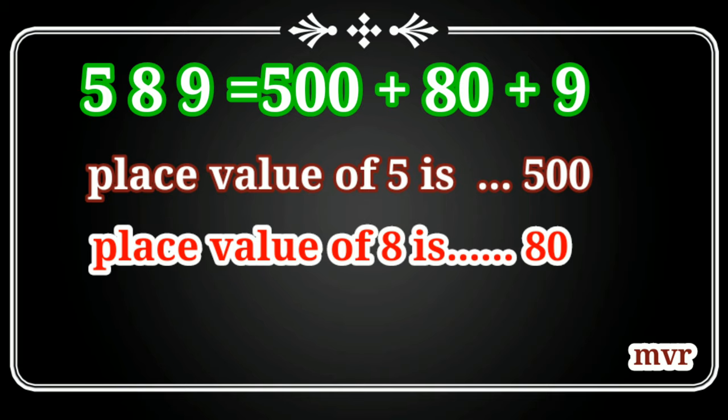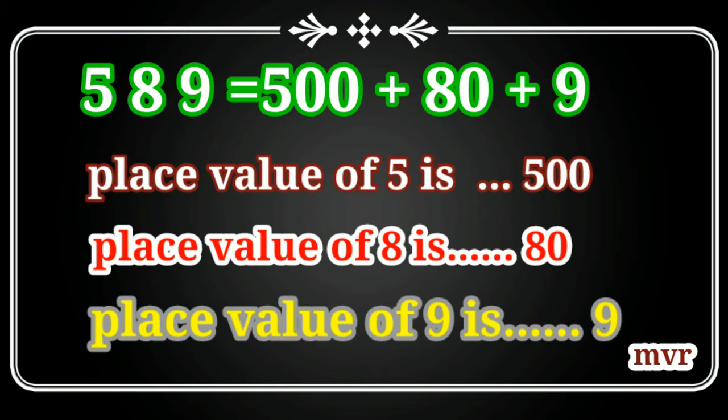Another example: 589. The place value of five is five hundred, place value of eight is eighty, and place value of nine is nine.